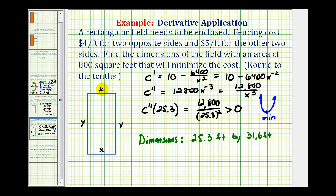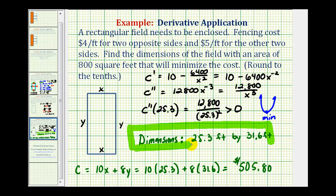Now it doesn't ask, but let's find what that total cost would be. Remember, our cost function was equal to 10x plus 8y. So we'd have 10 times 25.3 plus 8 times 31.6, which comes out to $505.80. That's going to do it for this problem. I hope you found this helpful.